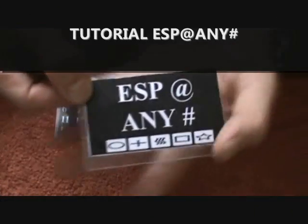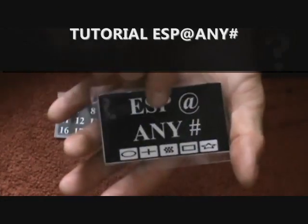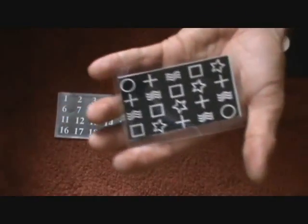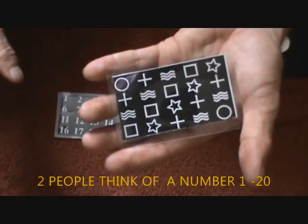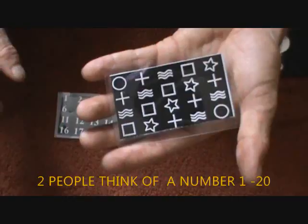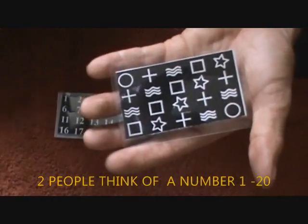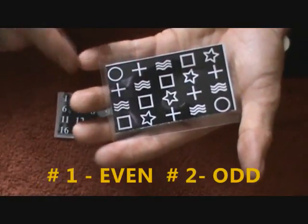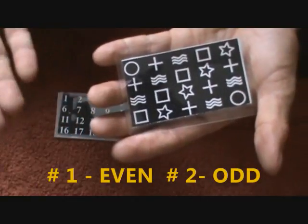Here is ESP at any number. You'd show them the five symbols repeated four times for a total of twenty. You'd have two spectators think of a number between one and twenty. You don't want them to think of the same numbers, so you have spectator number one think of an even number and number two thinks of an odd number.